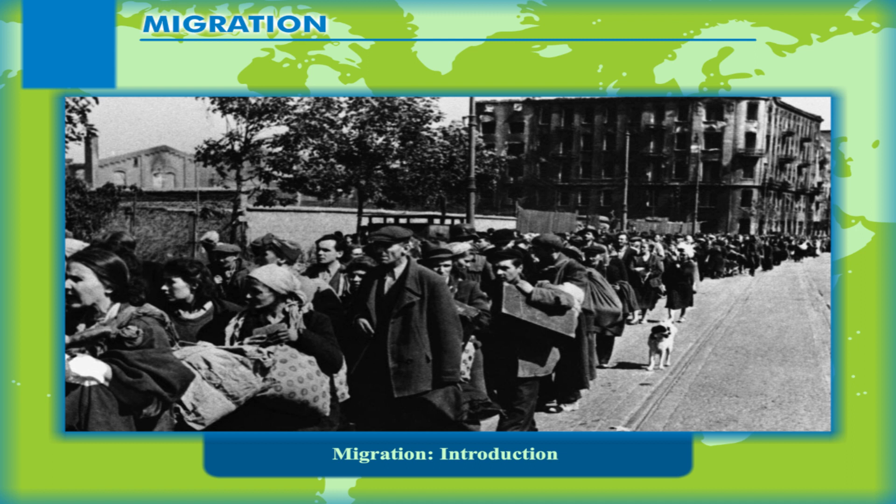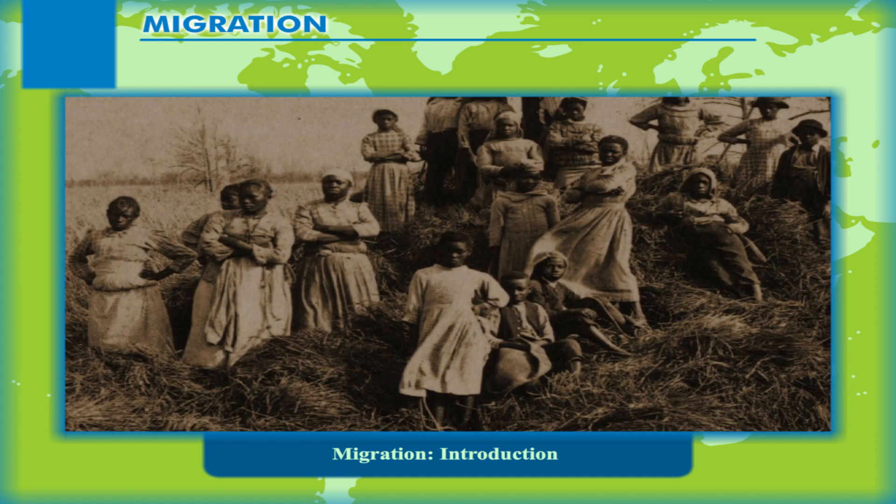External, major intercontinental migrations took place after the great geographic discoveries. From the 16th through 18th centuries, a considerable part of America was settled by free immigrants from Europe and by Negro slaves from Africa.